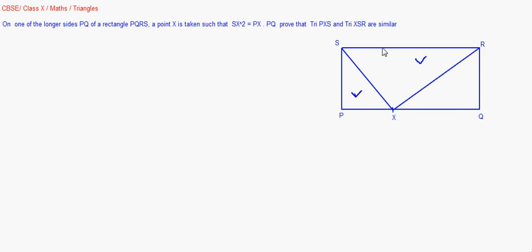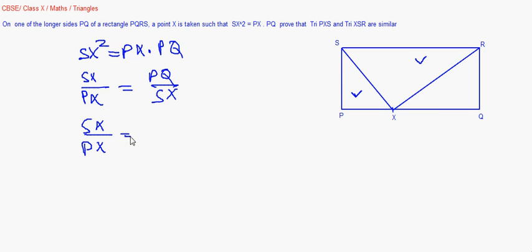It says SX squared is equal to PX into PQ. That means we can write this as SX by PX is equal to PQ by SX. SX by PX can also be written as PQ, instead of PQ I can write SR by SX, because opposite sides of a rectangle are equal.